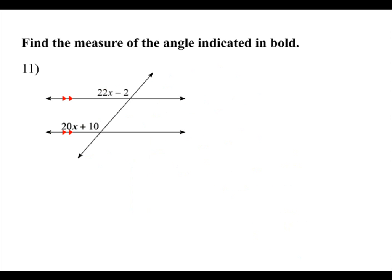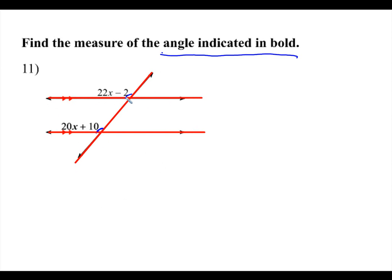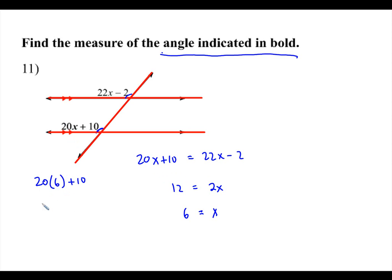Number eleven is essentially the same thing, but we actually want to find the bolded angle. First we need to find x. We have two parallel lines with a transversal, and this angle and this angle are corresponding angles, so they're congruent. So 20x plus 10 equals 22x minus 2. Minus 20x on both sides gives 2x; add 2 on both sides gives 12; divide by 2, so x equals 6. Now plug in: 20 times 6 plus 10 gives 120 plus 10, so this angle is 130 degrees.